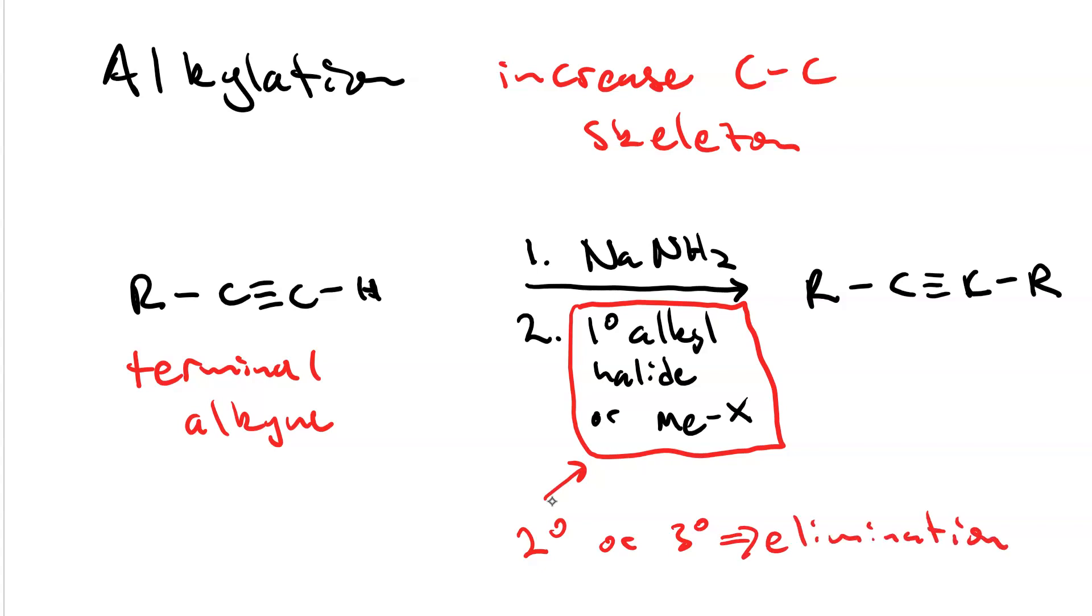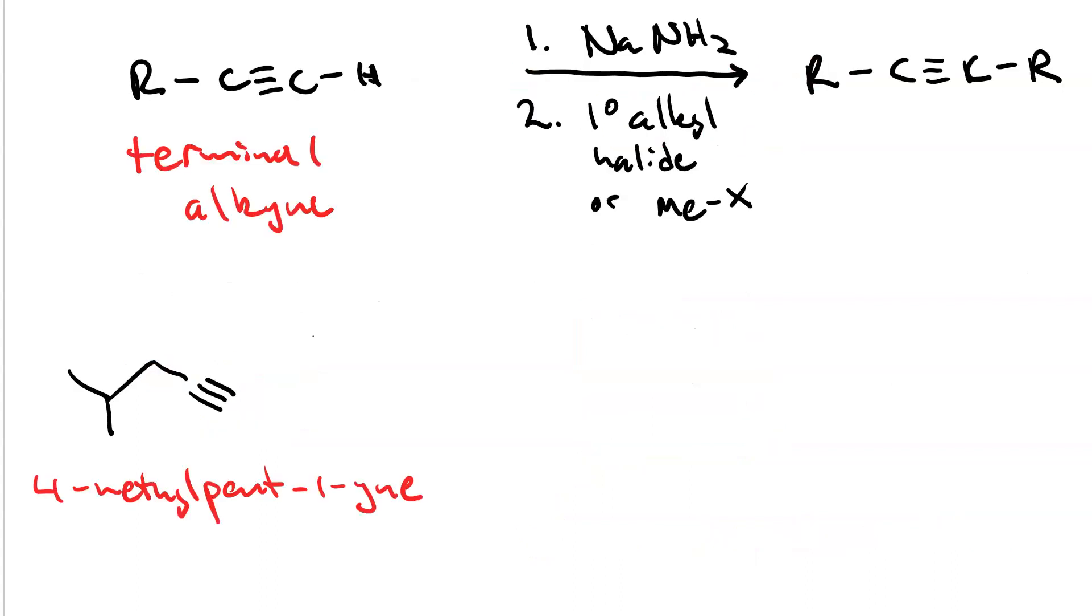And you'll turn it into an alkene. What if we started out with 4-methyl pent-1-yne and did alkylation by first reacting it with sodium amide and then ethyl bromide? Pause your video now and draw the outcome. Then you can unpause it and see if what you get matches what I get.